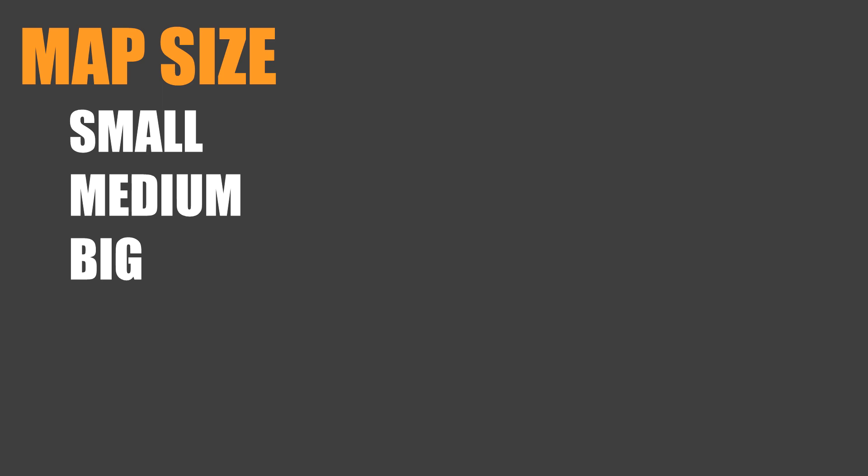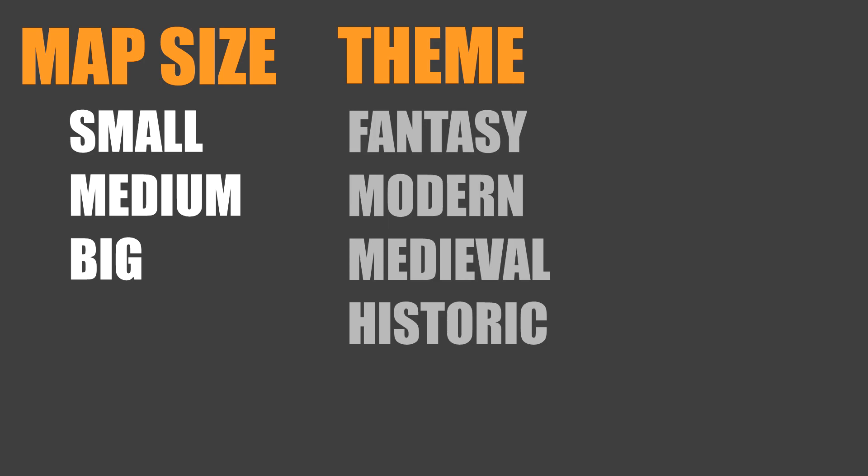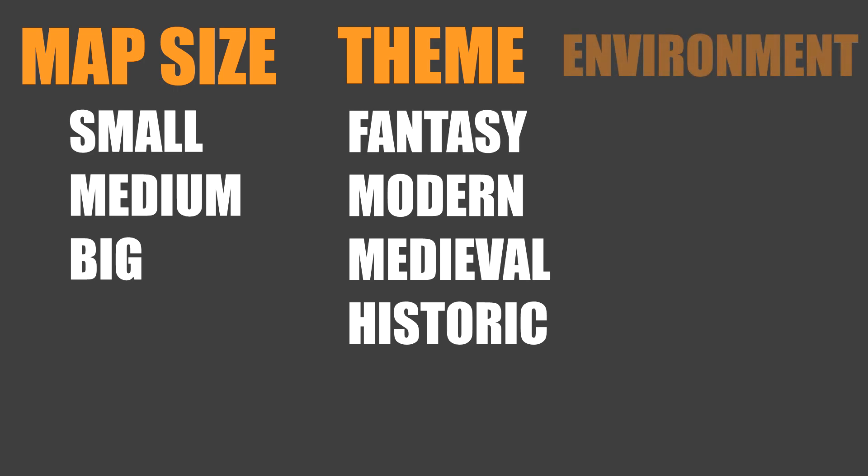Next I like to think of the theme. Mostly this is going to be the theme of your game, so you want the theme of the game and the map to be the same. There are quite a few themes you can go for — maybe fantasy with magic, a modern theme, medieval, wild west, sci-fi, or any historic era like World War One or Two. I'm just going to go for a modern theme.